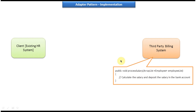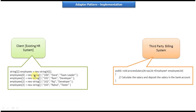The third-party billing system has one method called process salary and its parameter is an ArrayList of Employee. If you want to process the salary, you have to pass an ArrayList of Employee. This method will iterate the employee list, get each employee, calculate their salary, and deposit it into their bank account. However, the HR system stores employee information in a string array format, and this third-party billing system only accepts employee information as an ArrayList.